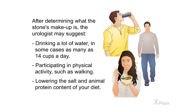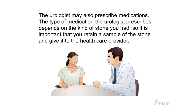Stone fragments can help your health care provider determine the exact makeup of the stone. Knowing what the stone is made of will help you and your provider understand what caused the stones and how to prevent them from developing in the future. After determining the stone's makeup, the urologist may suggest drinking up to 14 cups of water a day, participating in physical activity such as walking, and lowering the salt and animal protein content of your diet. The urologist may also prescribe medications, depending on the kind of stone you had.